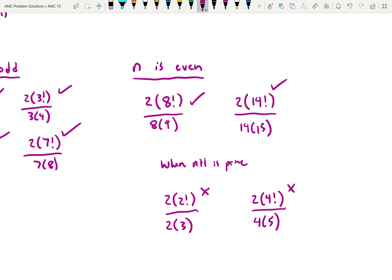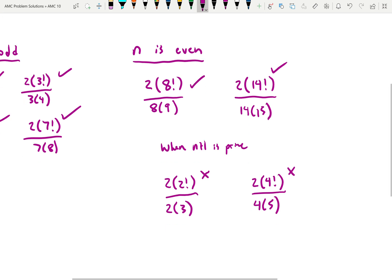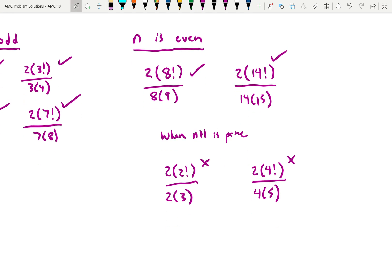So n plus 1 is prime when n is equal to 2, 4, 6, 10, 12, 16, 18, and 22. So we have all of these. There are 8 numbers here.